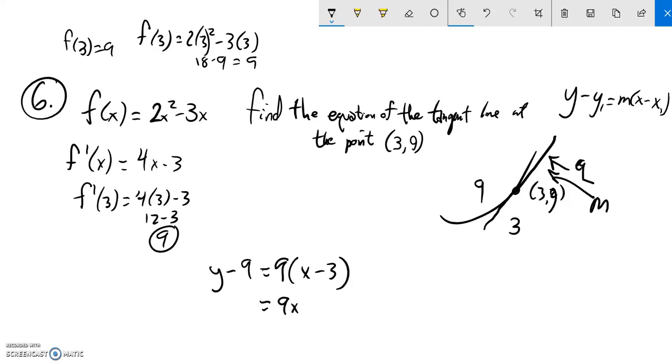So let me distribute that 9 into there. Add the 9. So it looks like y equals 9x minus, let's see, negative 27 plus 9 is what? Negative 18. So there's my equation of the tangent line of this function that goes through that point.